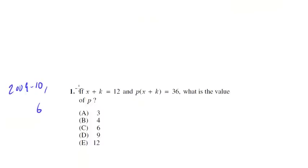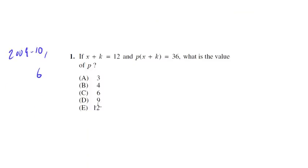Next one from 2009-2010 section 6. If x plus k equals 12, and p times x plus k is 36, what is the value of p? Well, kind of like the t plus u problem we saw in the last video, we're given a value for a sum, and then we want to know p times that sum is 36, so let's go ahead and substitute 12 in for the sum into the equation.